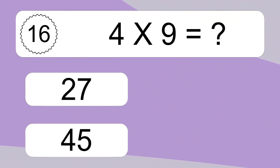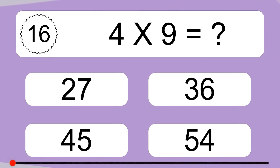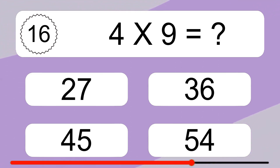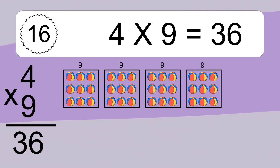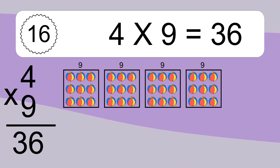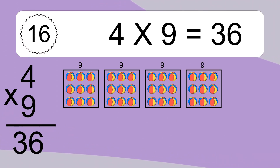4 times 9 equals what? 4 times 9 equals 36. We have 4 boxes, and each box has 9 colorful balls inside. If you count all the balls in all the boxes together, you will have 4 times 9 balls. This equals 36 balls.